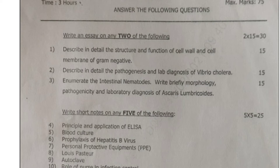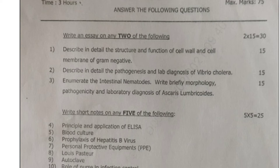The second question asks to describe in detail the pathogenesis and laboratory diagnosis of Vibrio cholerae, also for 15 marks. The third question asks to enumerate the intestinal nematodes and write briefly about the morphology, pathogenicity, and laboratory diagnosis of Ascaris lumbricoides, also for 15 marks.